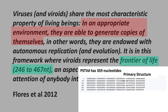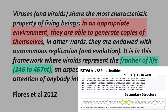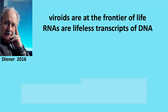Here are the 359 nucleotides of the potato spindle tuber viroid. That's the primary structure when it is coded: C, G, G, A, A, C, U, and so on. The secondary structure looks like double-stranded DNA except for some loops, and the yellow regions are things found in other viroids. Viroids are at the frontier of life, while RNAs inside cells are lifeless transcripts of DNA — that's what Diener has said. His viroids are at the frontier of life and are important life forms, but RNAs inside of cells are lifeless transcripts of DNA.